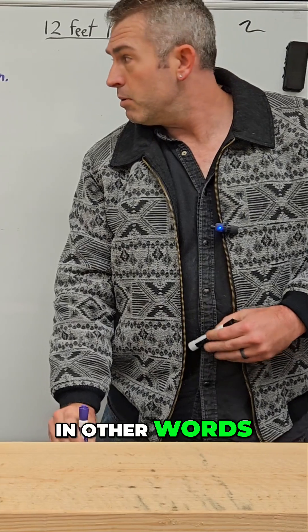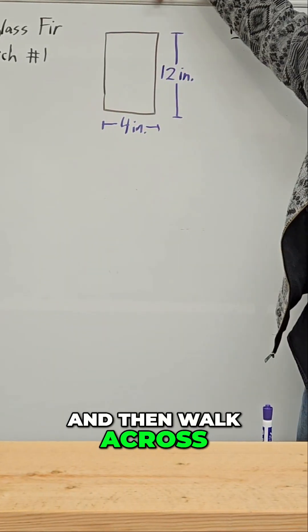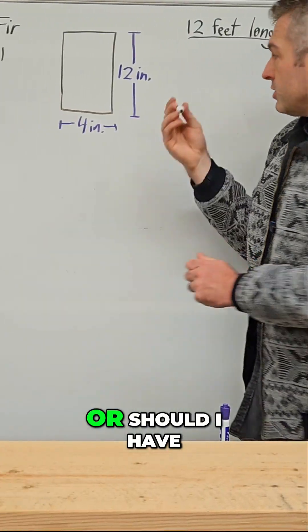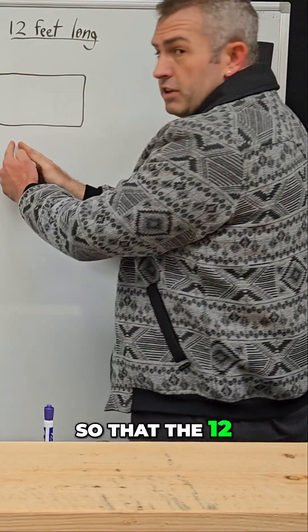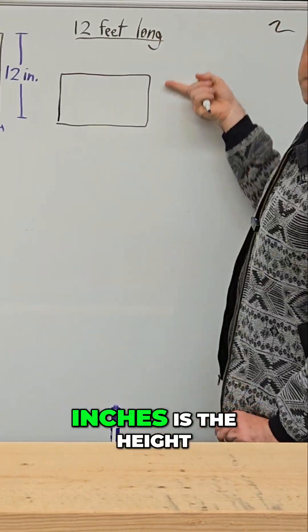In other words, would I have it sitting like this and then walk across the top, or should I have it laying the other way on its side so that the 12 inches is the long side and the four inches is the height?